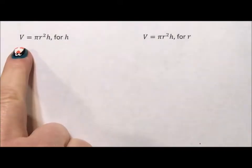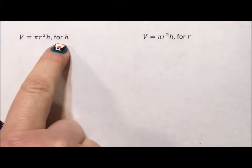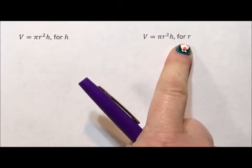In this video, what I want to take is this formula, volume equals pi r squared h, and I want to solve it once for h and once for r, once for the height, once for the radius.